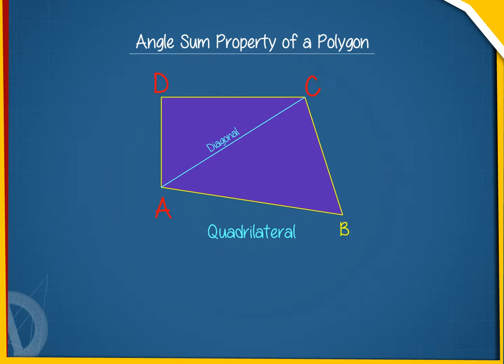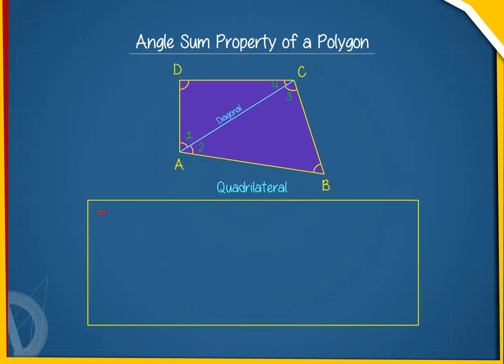From the given figure, it is quite evident that the sum of the measures of the four angles of quadrilateral ABCD equals angle A plus angle B plus angle C plus angle D, which equals angle 1 plus angle 2 plus angle B plus angle 3 plus angle 4 plus angle D.